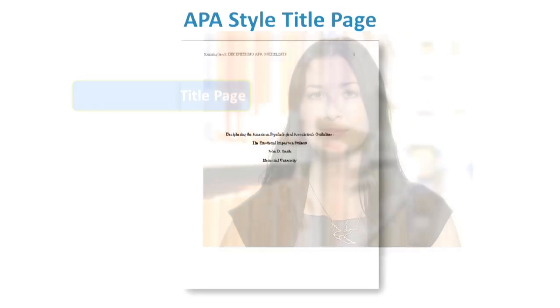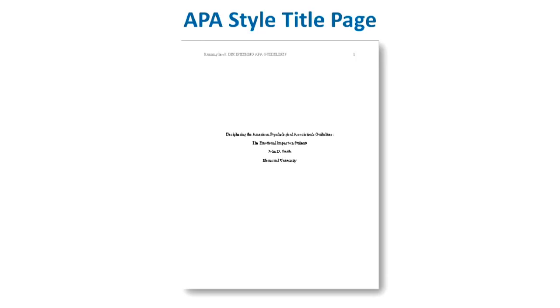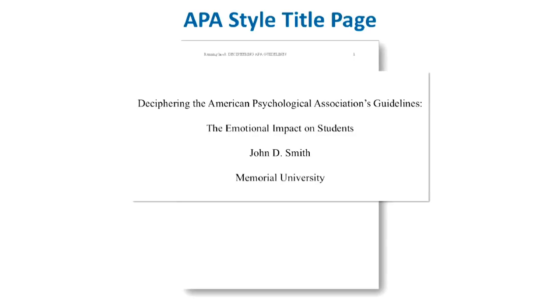Next, let's look at how your title page should be formatted. Like the rest of your paper, your title page should have 1-inch margins, 12-point Times New Roman font, and should be double-spaced. The title of your paper should be centered and in the upper half of the page. Don't put the title in larger, bold, italicized, or colored font.